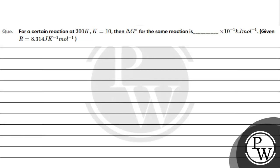Let's read this question. For a certain reaction at 300K, K is equal to 10. Delta G for the same reaction is dash into 10 raised to the power minus 1 kilojoule per mole.